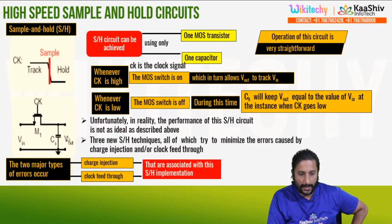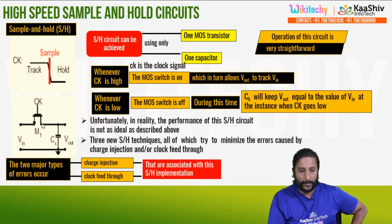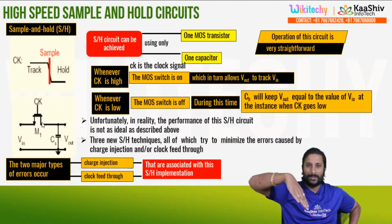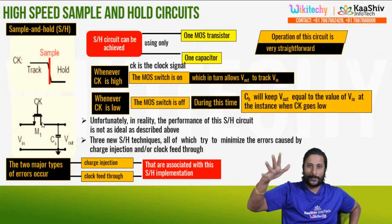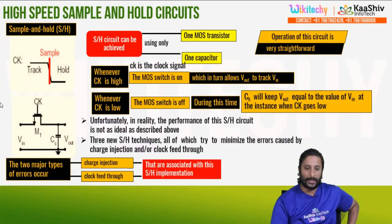When the MOS switch is on, V-in is tracked. When the MOS switch is off, CH keeps V-out equal to V-in. The MOS switch turns on to process the output.